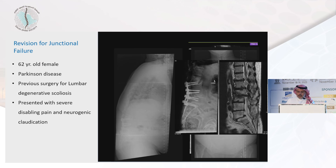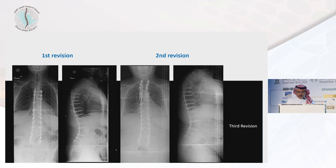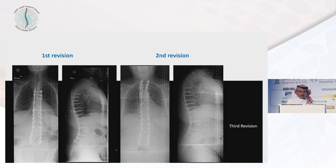This is another patient who failed, and we applied the same principles, yet she keeps returning for failure. Failure upon failure in adult idiopathic kyphosis is always a possibility, and every time we should address it with a very clear strategy.